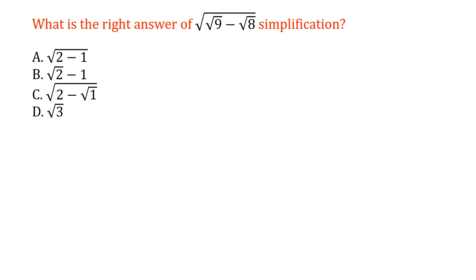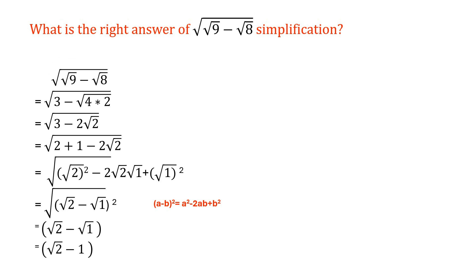Let's move to our solution. We can write root 9 as simply 3, because we know that root 9 can be written as (3)² raised to the power of a half, so the root and the square reduce, giving us only 3.